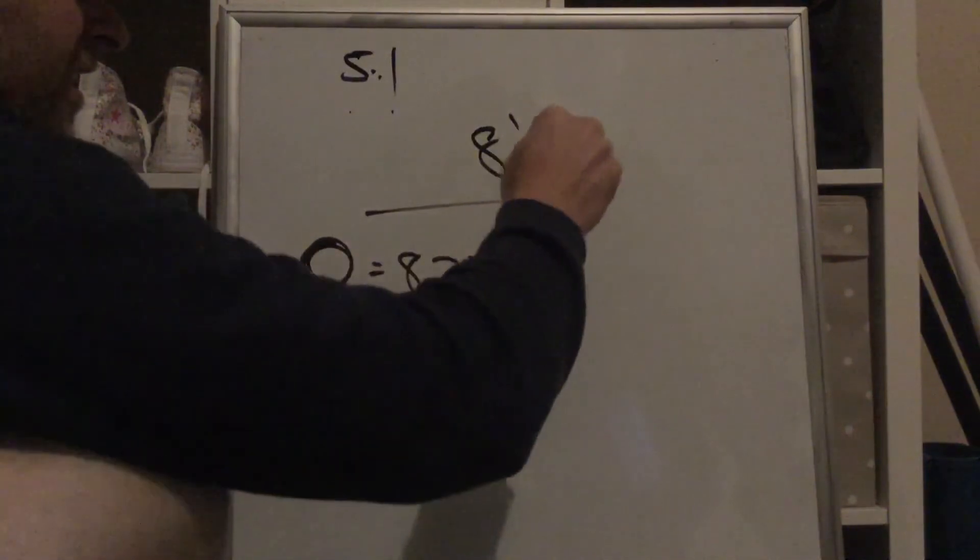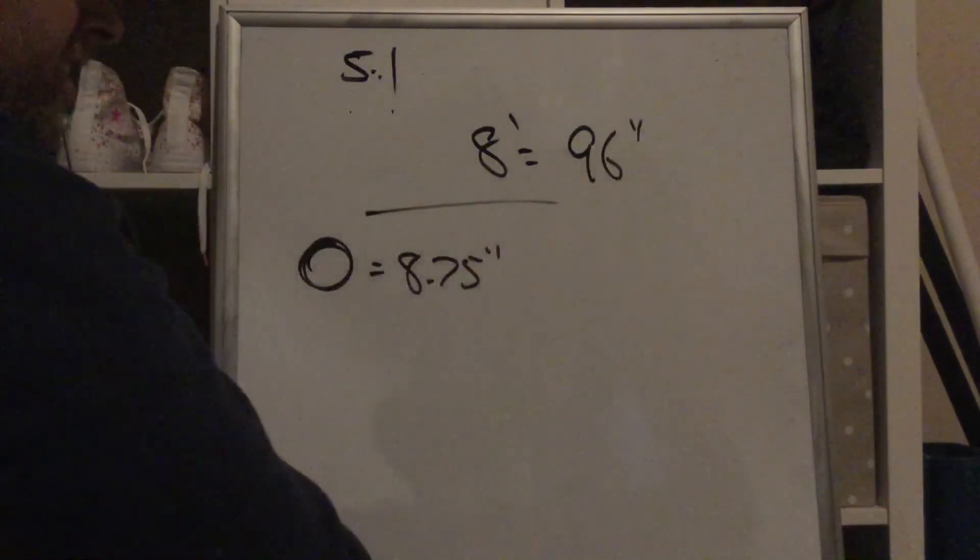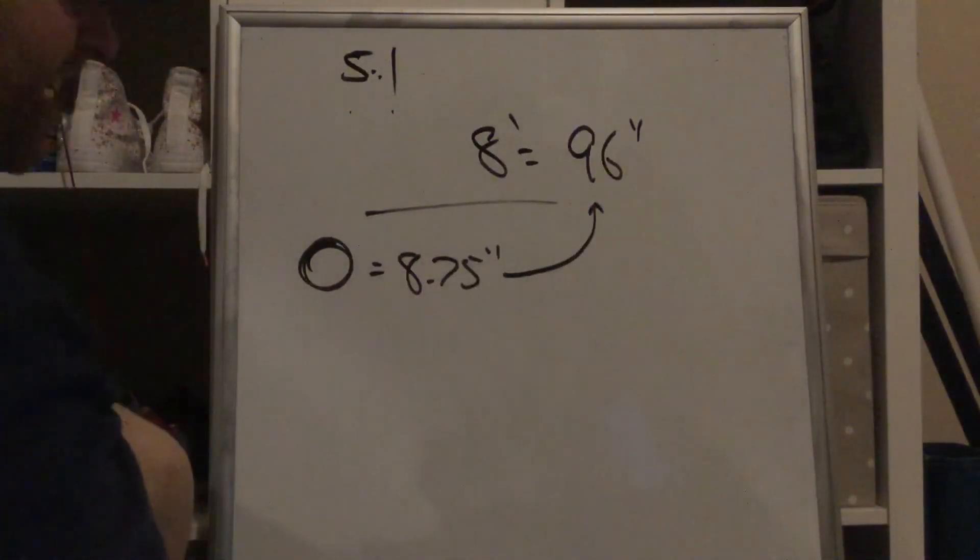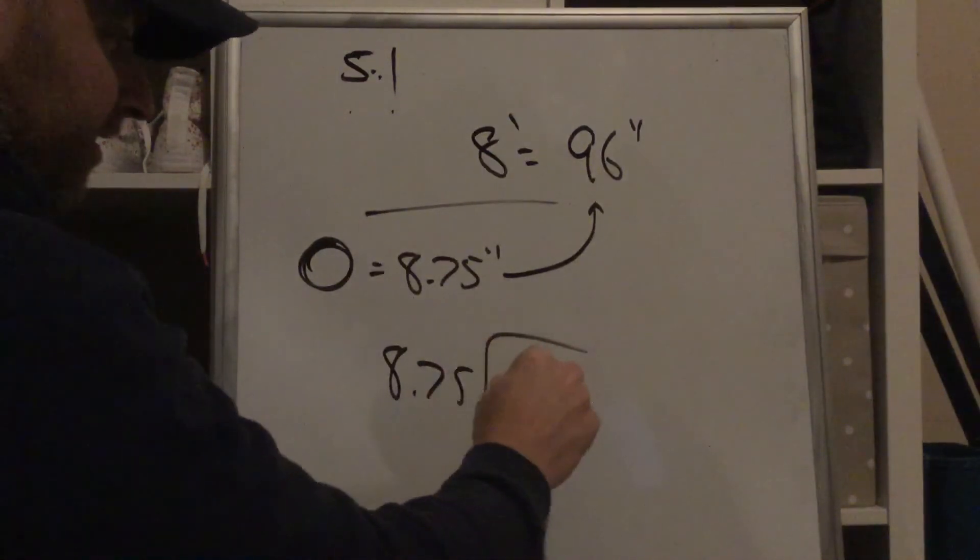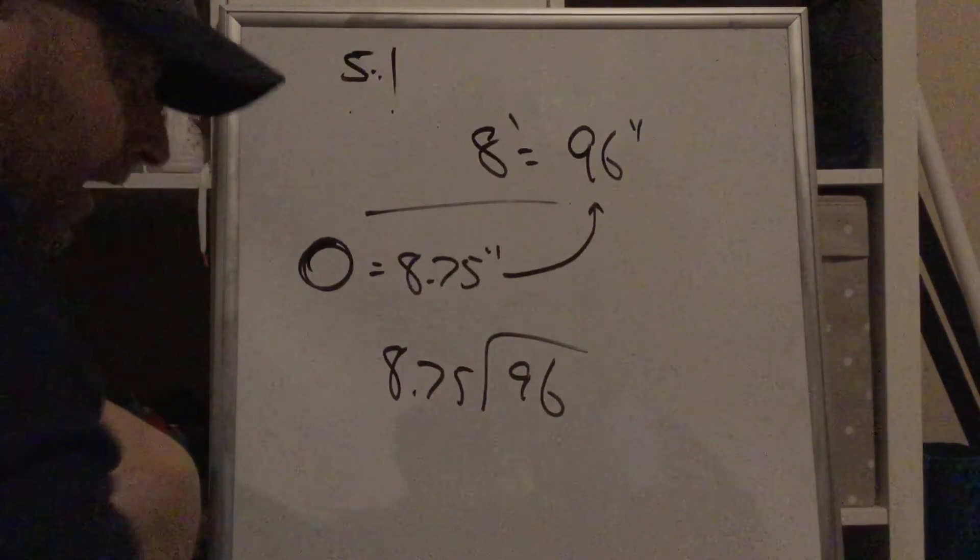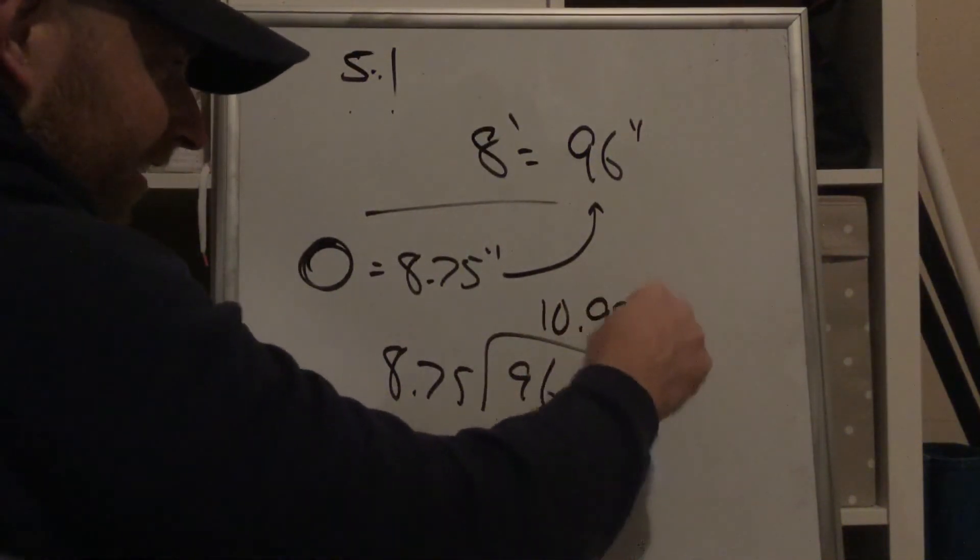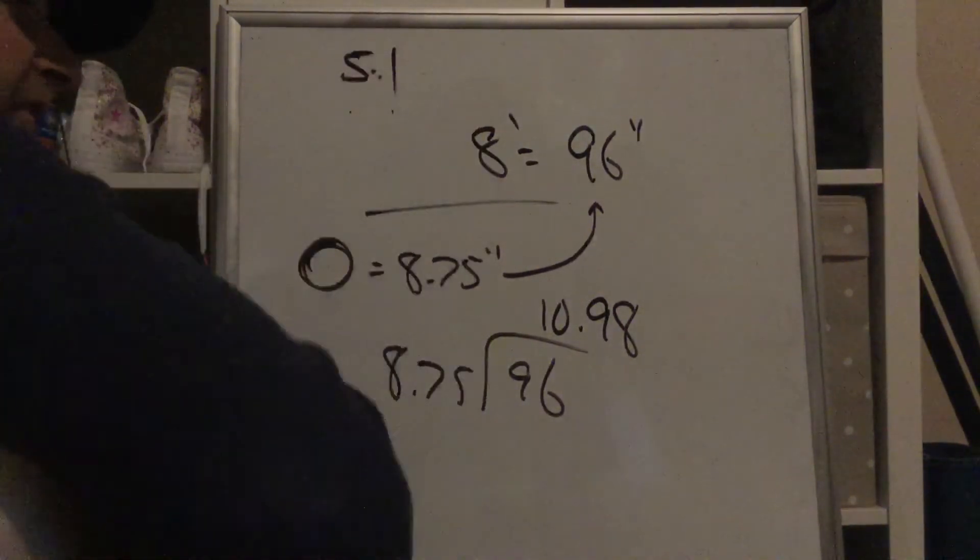Right? Inches. Well, 96 inches is 8 feet, right? How many wheel spins will it take to get that far? So, 8.75 divides into 96 how many times? Anybody know? Let's find out. It's about 10 point, we'll call it 9.8 wheel spins. Alright? So that many wheel spins.